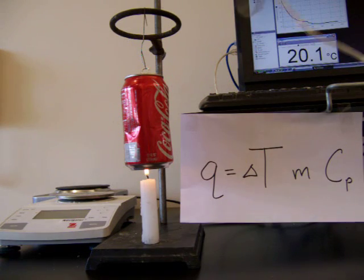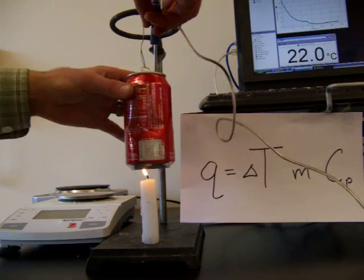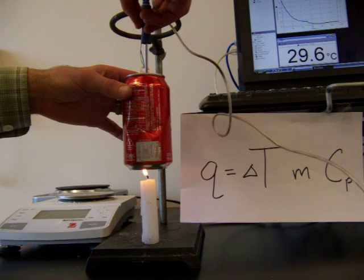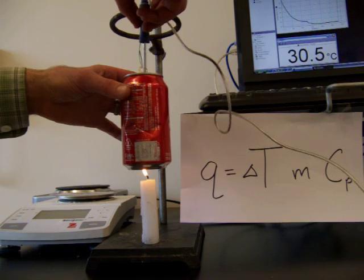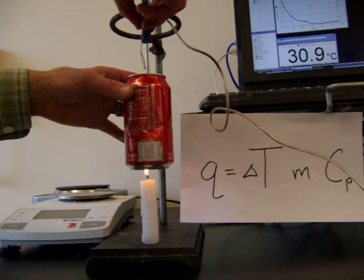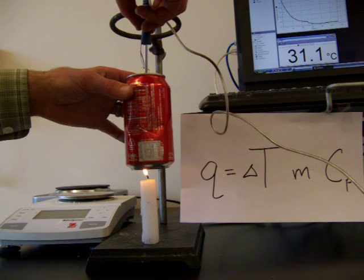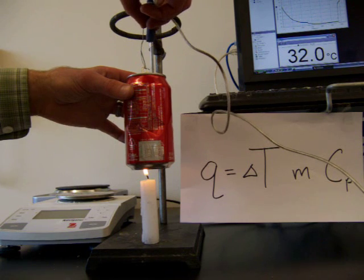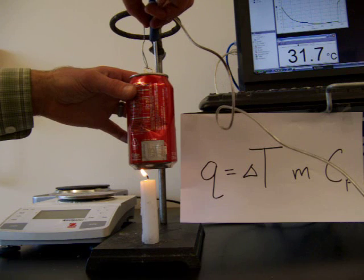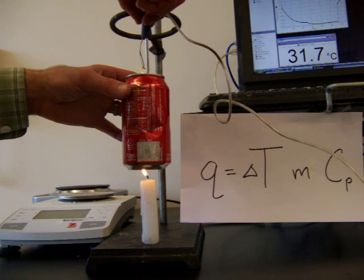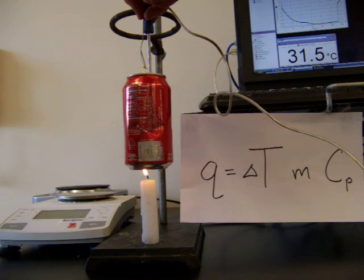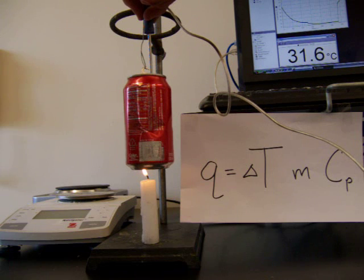Let's take our thermometer. We'll place it back into the soda can. And we can see that, yes, in fact, the water in the soda can has gotten quite a bit warmer. Let's stir it around a little bit so we get an accurate reading. And it looks like we have about 31.7 degrees so far. So we're up about 31.7 degrees for our water in the soda can. So there's a fair amount of heat being put off by the candle into the water in the soda can.